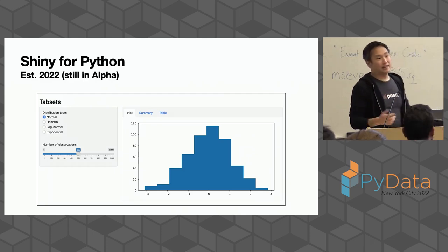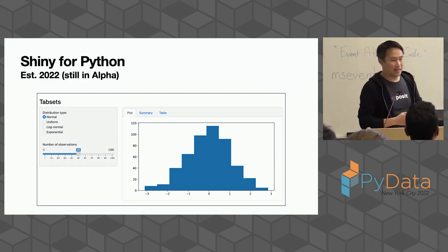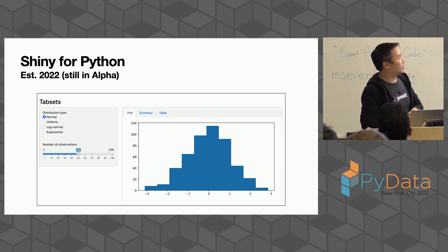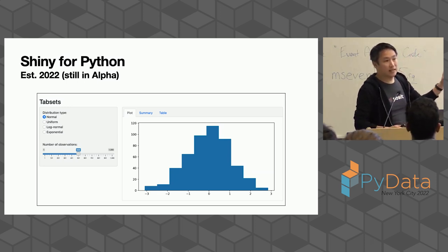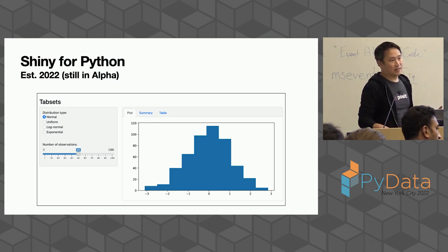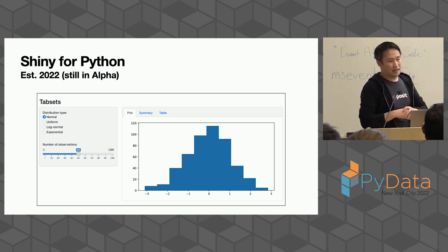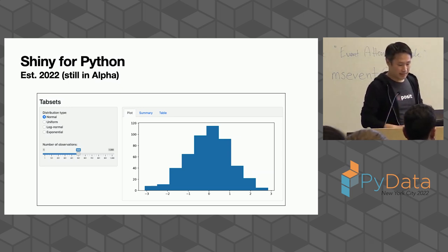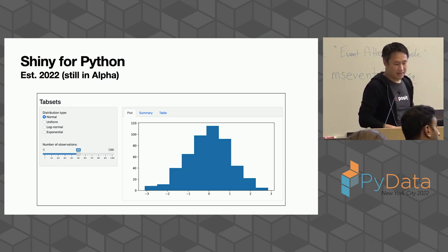Shiny for Python is right out of the oven. We just announced this a few months ago at RStudioConf this summer, and it is still alpha software. That being said, there's still an enormous amount of power in this framework, even at this relatively early stage, so I'm really excited to share some of that with you today.